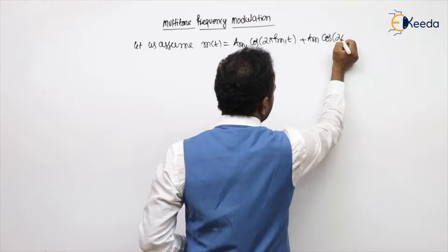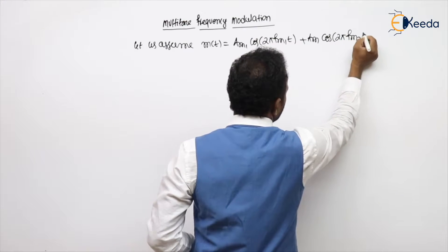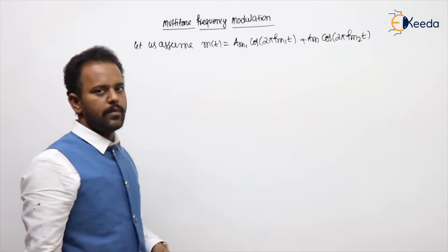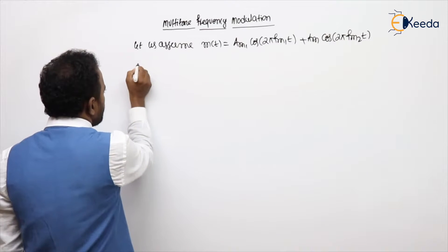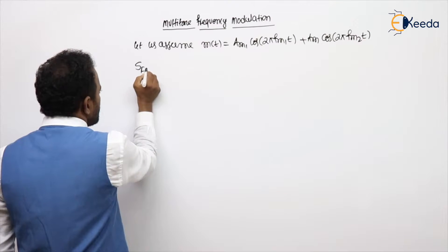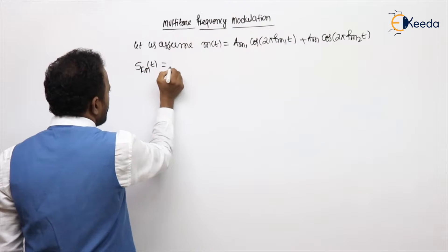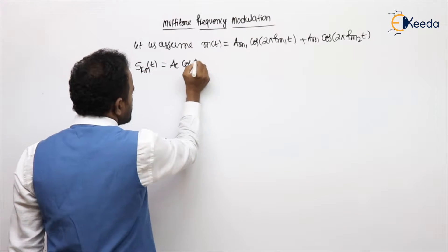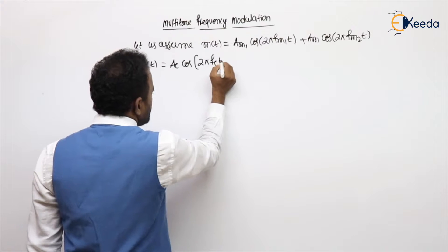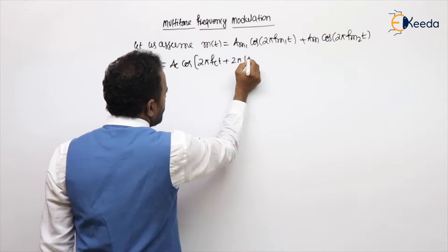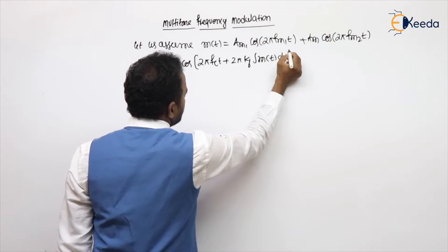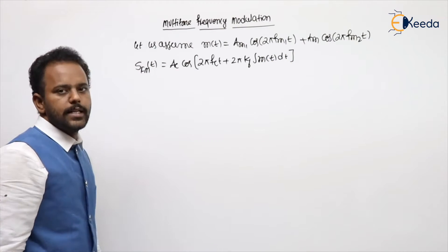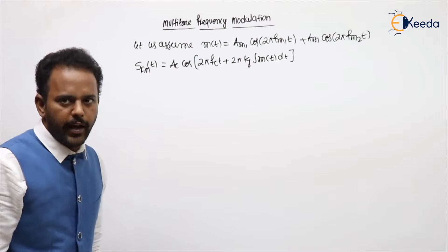What is the general expression for FM? We got the general expression for FM, expression number 11, which is Ac cos(2π fc t + 2π kf ∫ m(t) dt). This is the general expression of FM.